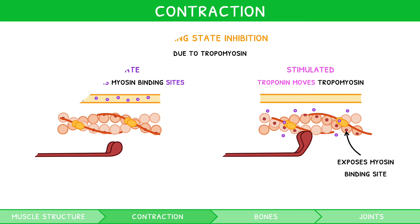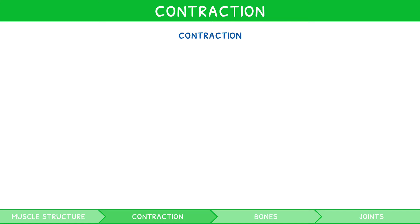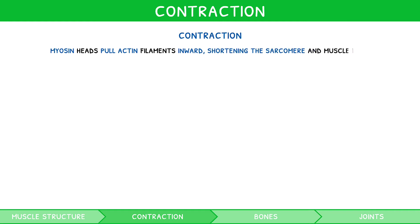Muscle contraction is a six-step cycle, in which myosin heads pull the actin filaments inwards towards the centre of the sarcomere, shortening the sarcomere and overall muscle fibre length. This cycle can be learnt as beginning at any of the six steps, but the sequence must remain the same.